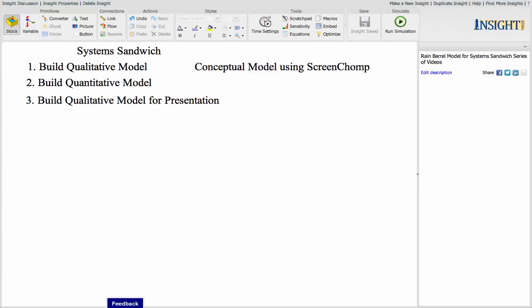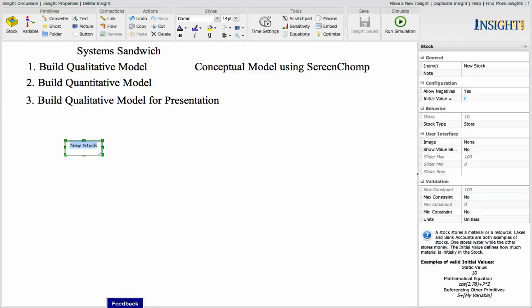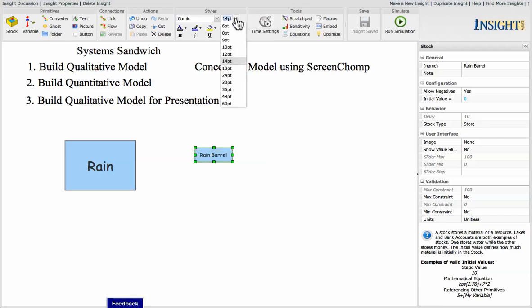So the first thing we're going to do is create a stock. We're going to call it Rain. We're going to increase the size so we can see it here on the screen. Part of what I'm doing here is to show you how to use Insight Maker a little bit, how to build models and how this thing works.